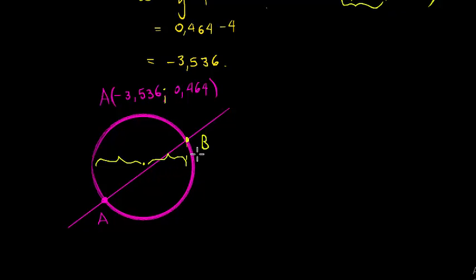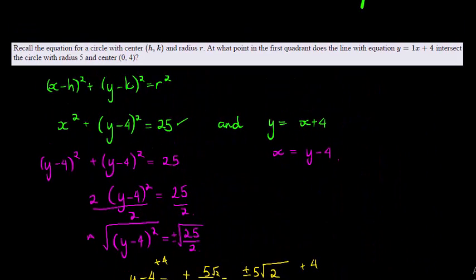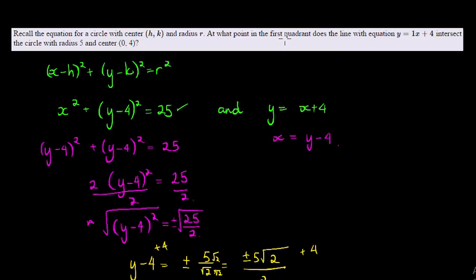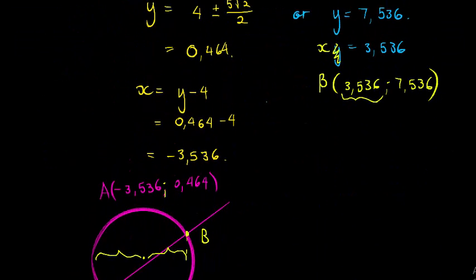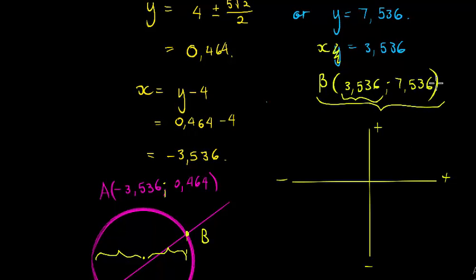So they ask us to find at what point in the first quadrant does the line intersect this circle. What's important here is that in the first quadrant, both values are positive. So my first quadrant both has to be positive, and that must be coordinate B. So this is the solution that they're asking for. Thank you for watching.